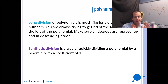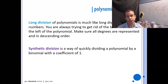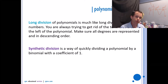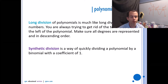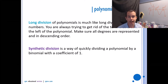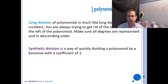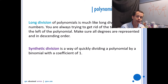Now we shift to division of polynomials, which we need so we can get into more algebraic factoring. Long division of polynomials is much like long division with numbers — you're always trying to get rid of the leftmost term. Make sure all degrees are represented in descending order. On diploma questions they may give you a polynomial missing a degree term, so you must use a zero as a placeholder for that missing degree.